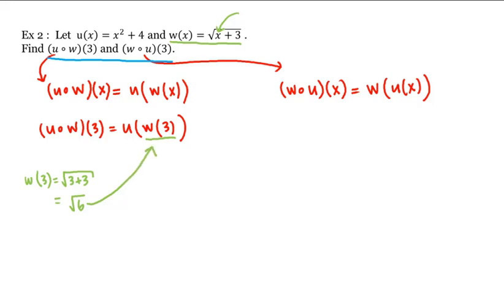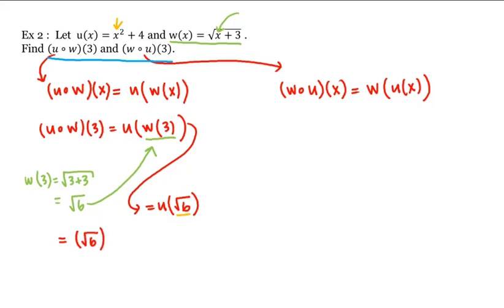We plug that in and evaluate u at the square root of 6. Looking at u, we plug square root of 6 in, which gives us the square root of 6 squared plus 4, or 6 plus 4, which is 10. That is the first value we're looking for.